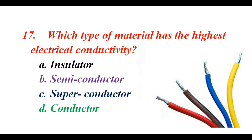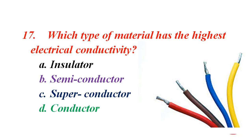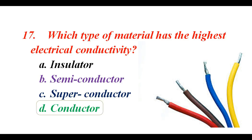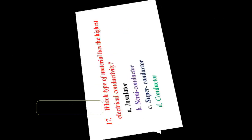Which type of material has the highest electrical conductivity? A. Insulator. B. Semiconductor. C. Superconductor. D. Conductor. The correct answer is D. Conductor.